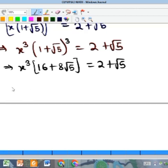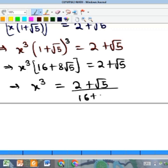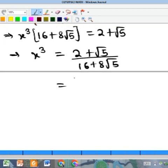At this point I am now going to have x³ alone is now equal to (2 plus root 5) all over (16 plus 8 root 5). If I factorize the denominator I'm going to get the value exactly what I have in the numerator inside my denominator if I bring out 8.